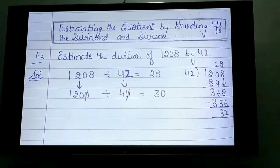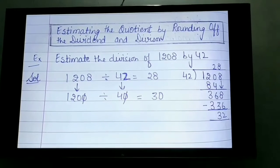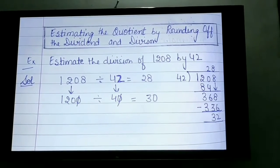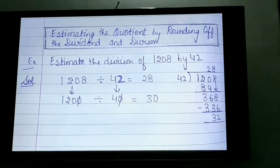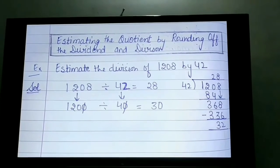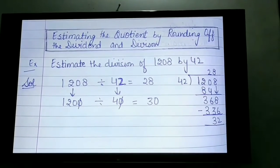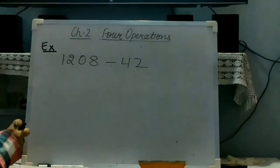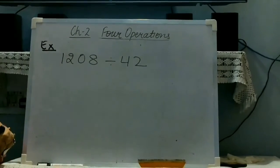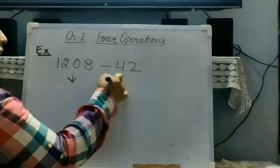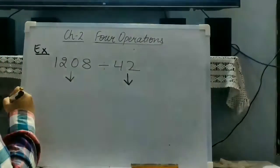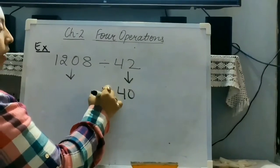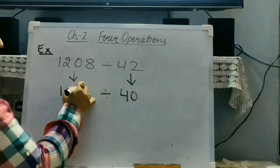Now, the next point is estimating the quotient by rounding off the dividend and divisor. In this, the statement is telling itself: first you will round off, estimate the dividend or divisor and then find the quotient. So, we are going to take an example: 1208 divided by 42. So, first you will round the dividend and divisor both. 42 will be rounded as 40 and 1208 will be rounded as 1200.